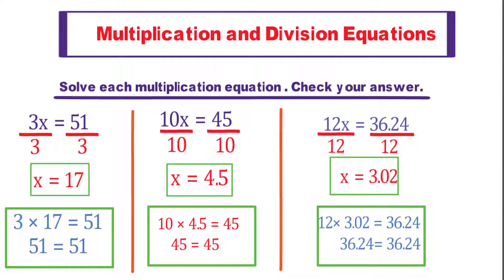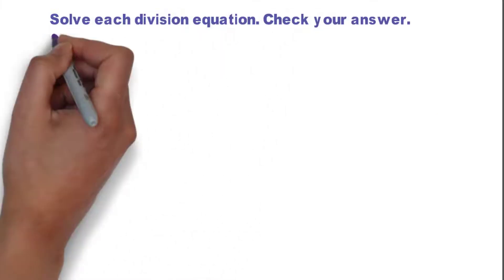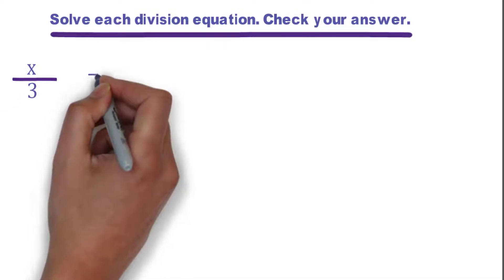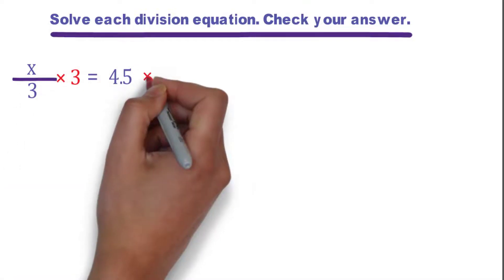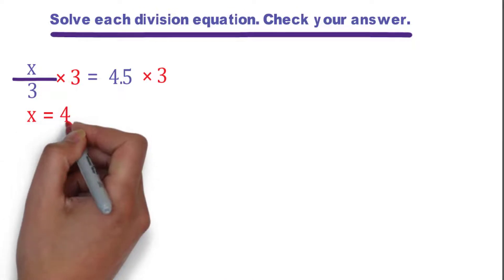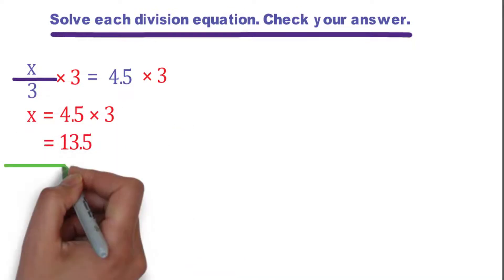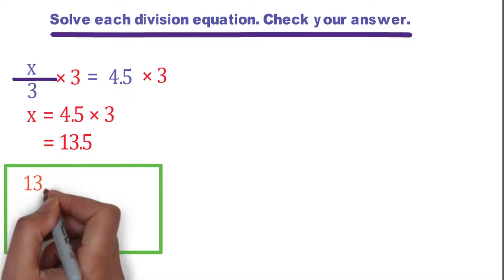Next, how can you solve a division equation? The answer is: in one step, use the inverse operation, which is multiplication. For example: x over 3 equals 4.5. Multiply both sides by 3. We get x equals 4.5 times 3, so x equals 13.5. To check your answer, substitute in the equation for x equals 13.5.